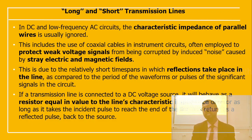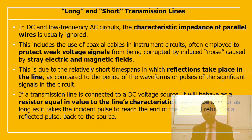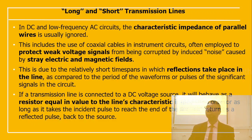In DC and low-frequency AC circuits, the characteristic impedance of parallel wire lines is generally ignored, including the use of coaxial cables in instrument circuits often employed to protect weak voltage signals from noise caused by stray electric and magnetic fields. This is due to the relatively short time spans in which reflections can take place compared to the period of the waveforms. If the transmission line is connected to a DC voltage source, it will behave like a resistor equal to the line's characteristic impedance only as long as it takes the incident pulse to reach the end of the line and return as a reflected pulse.